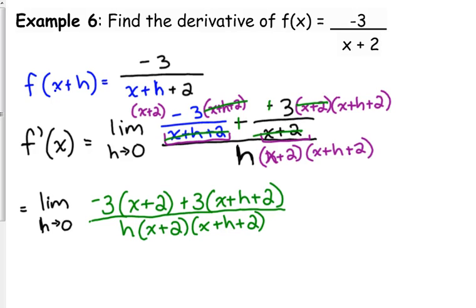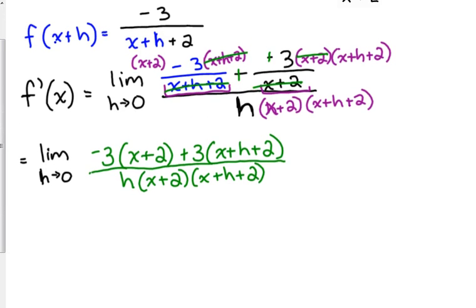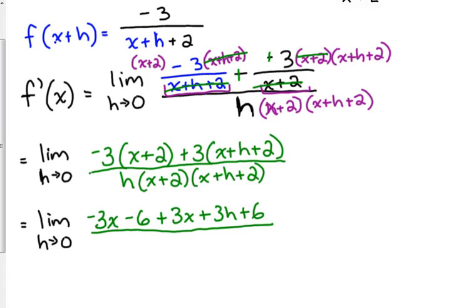I promise it's going to simplify. It's not going to be that crazy. So, when we distribute the negative 3, we get negative 3x minus 6. When we distribute the positive 3, we get 3x plus 3h plus 6. That's looking nice.